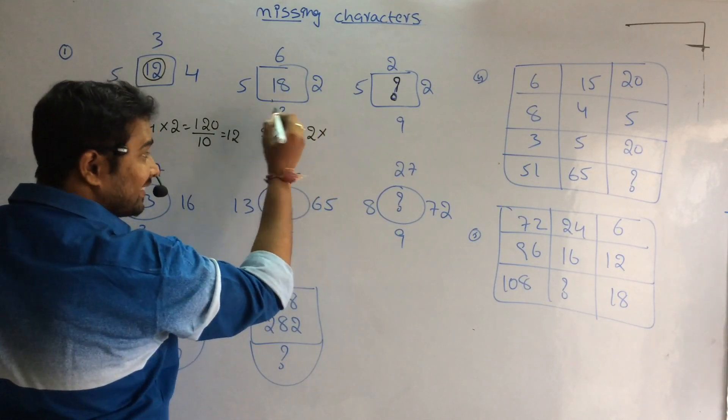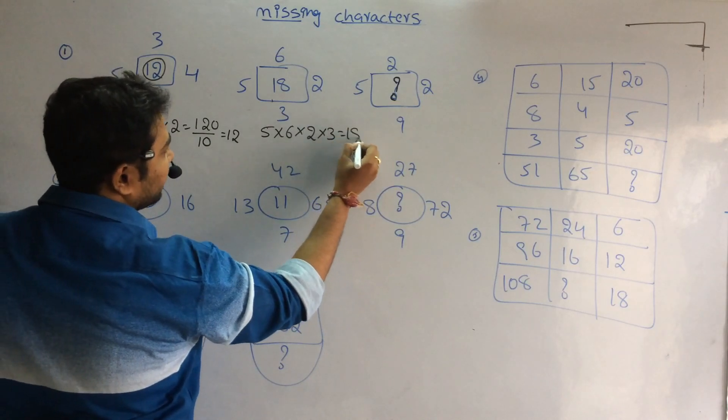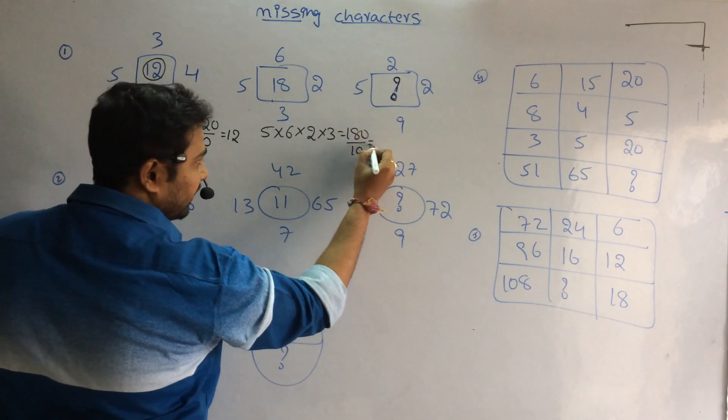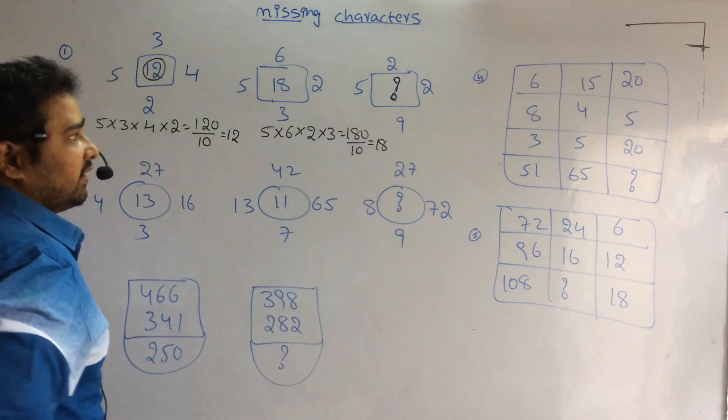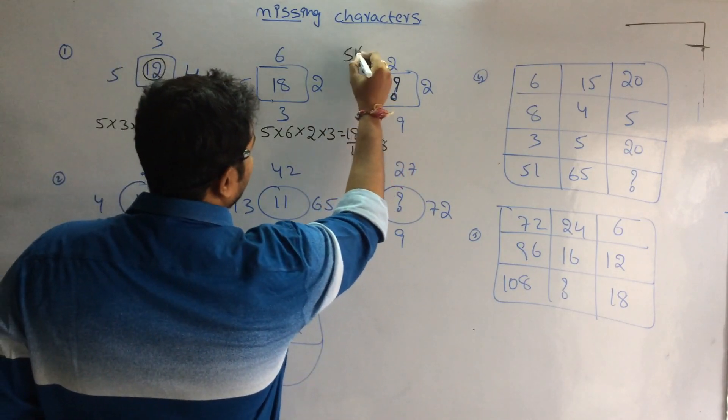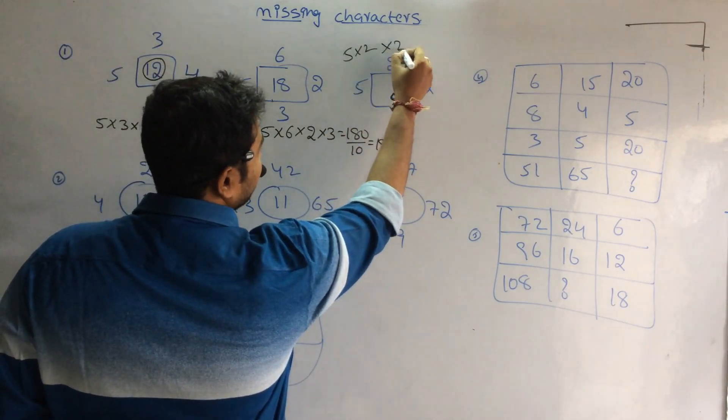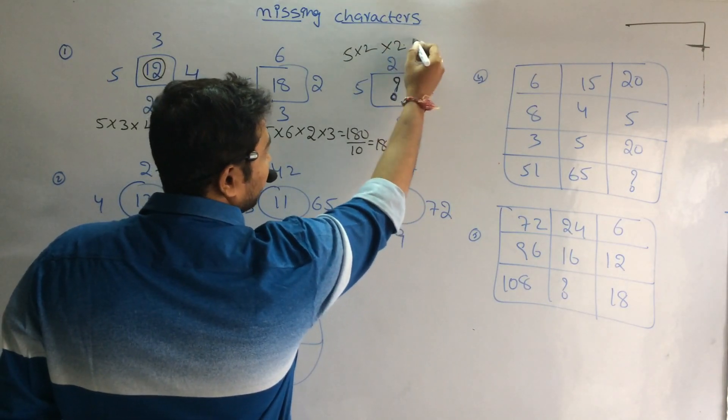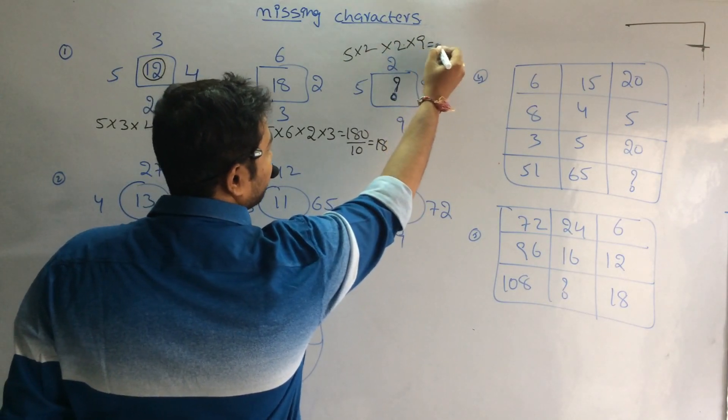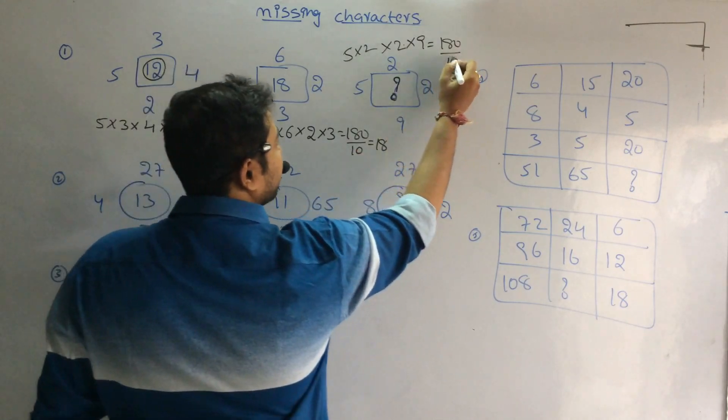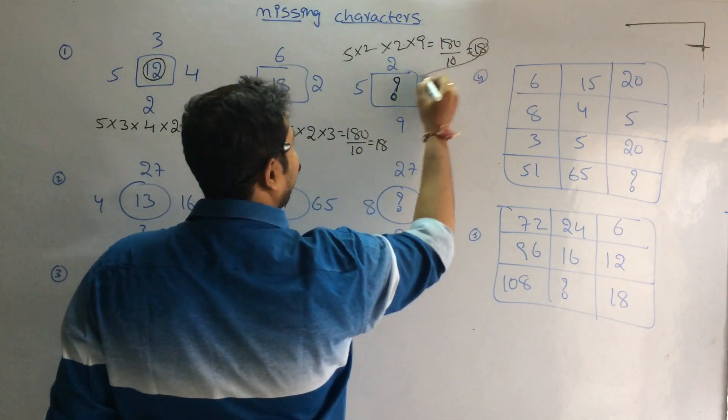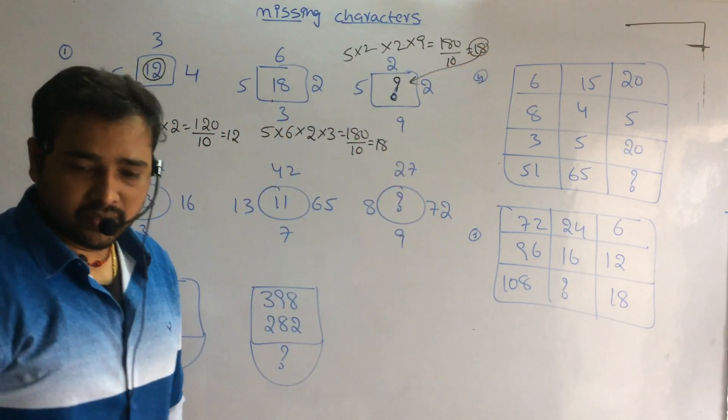Likewise, 5×6 is 30, 3×2 is 6. 60, 6, 3 is 180, but here it is 18. That means divided by 10, which is 18. Likewise, 5×2 is 10, 10×2 is 20, 2×9 is 18. 180 divided by 10, answer is 18. So the value here is 18 is my answer.